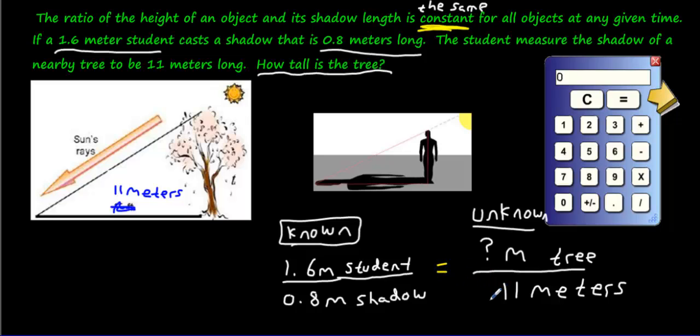Find the two numbers that are at a diagonal. Here they are. Multiply them. Let's do it. 11 multiplied by 1.6 equals 17.6 divided by the leftover number, the 0.8, divided by 0.8 equals 22 meters. So we can put that number over here. We get 22 meters. That's how tall that tree is.